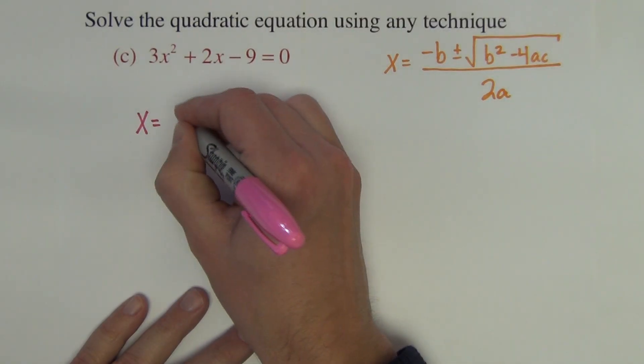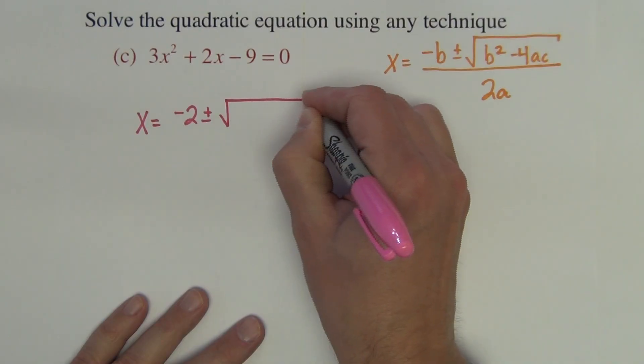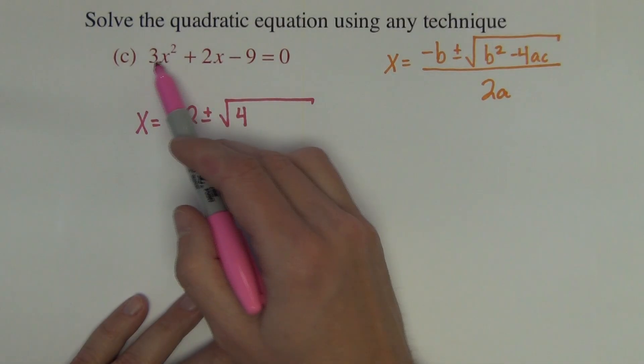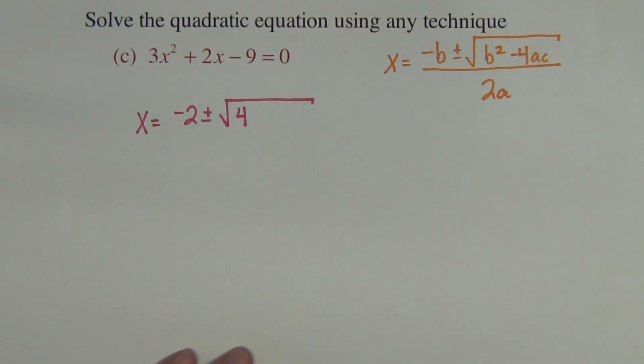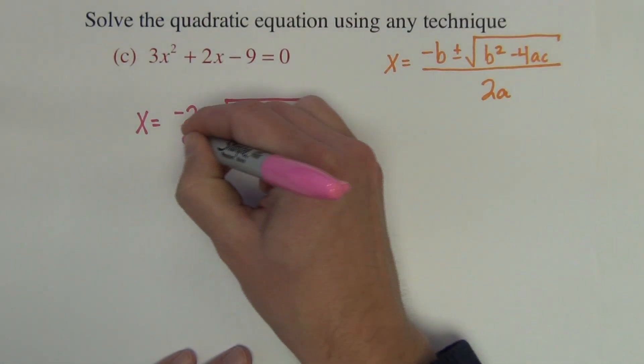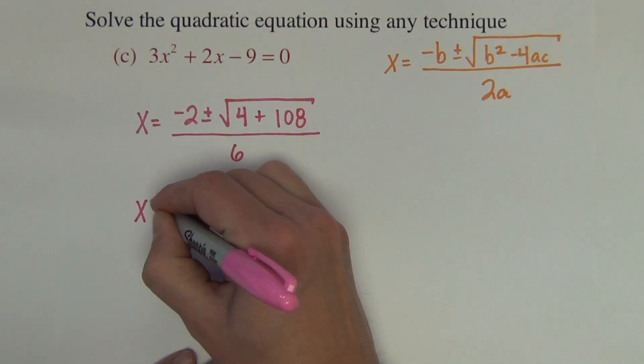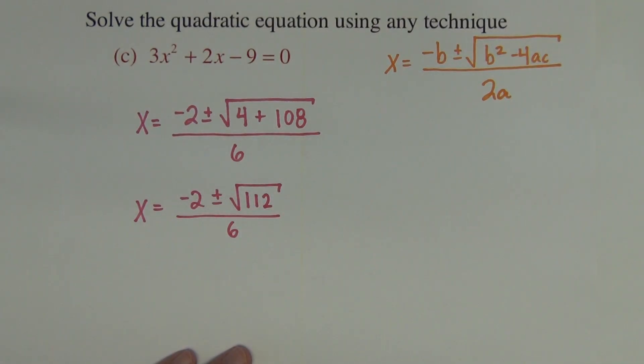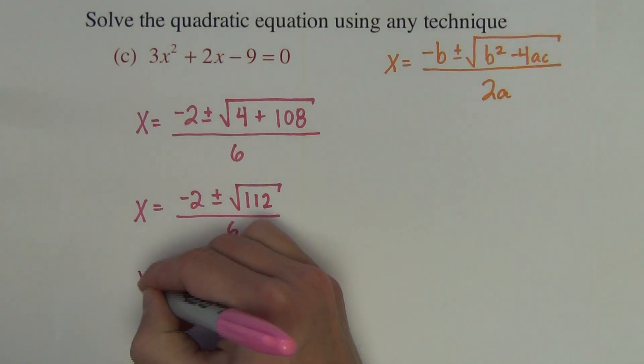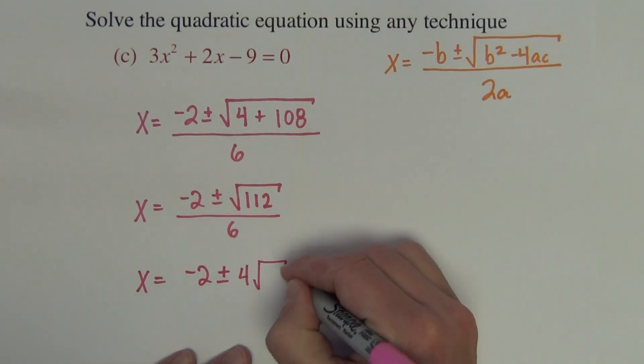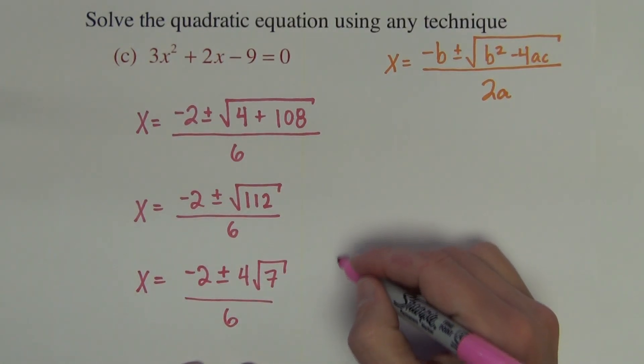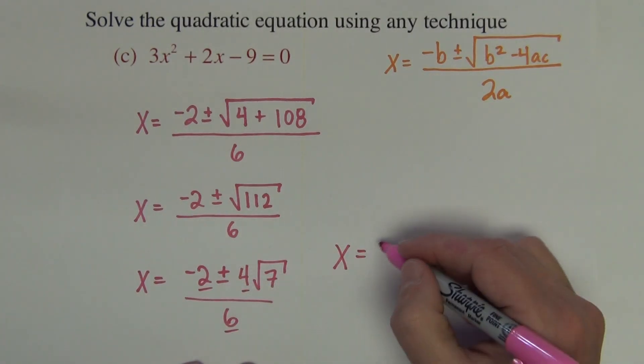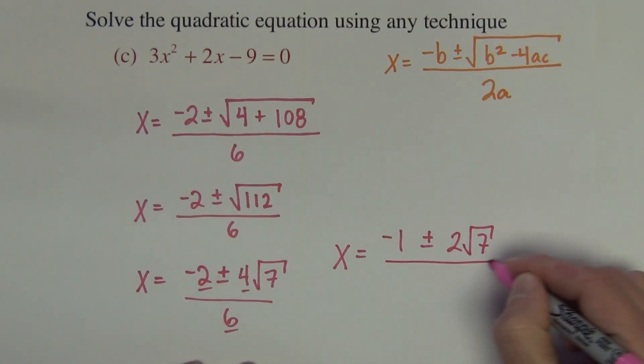Okay, so applying that to this problem gives us x equals negative 2 plus minus square root of 4. And then we're going to have 4 times 3 times 9. Let's see, I'm going to cheat and use the calculator. It becomes plus 108 all over 6. Negative 2 plus minus square root of 112 divided by 6. I think it does. So this is x equals negative 2 plus minus square root of 4 over 6. And we'll finish right here. The 2, the 4, the 6 all divided by 2. So negative 1 plus minus 2 square root of 7 over 3.